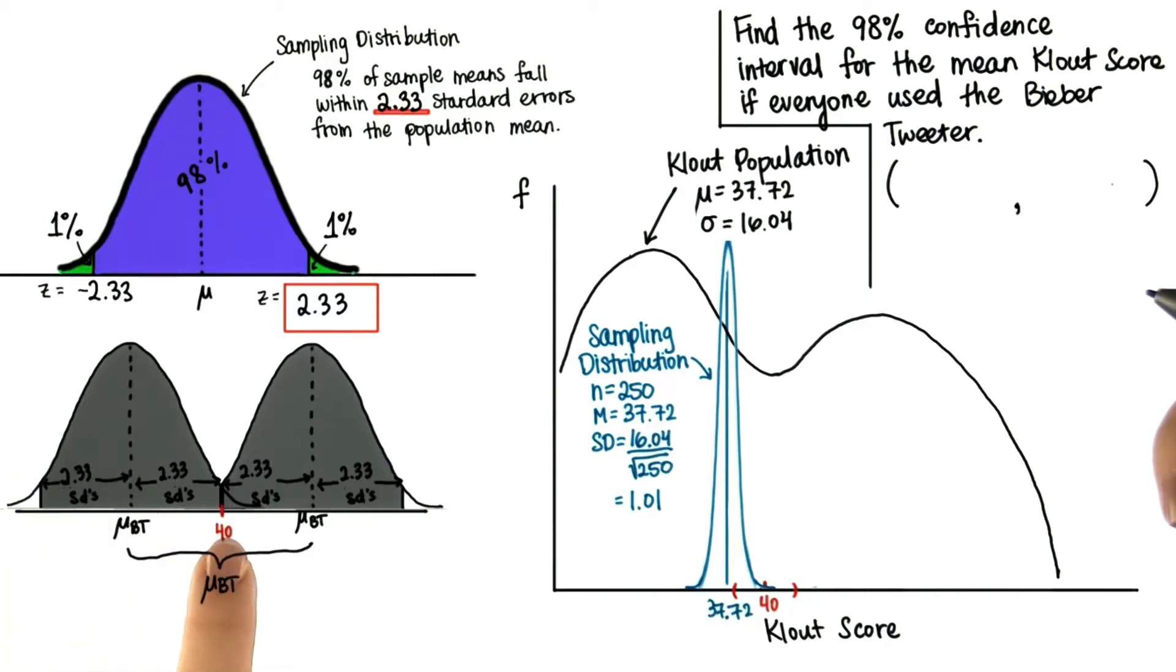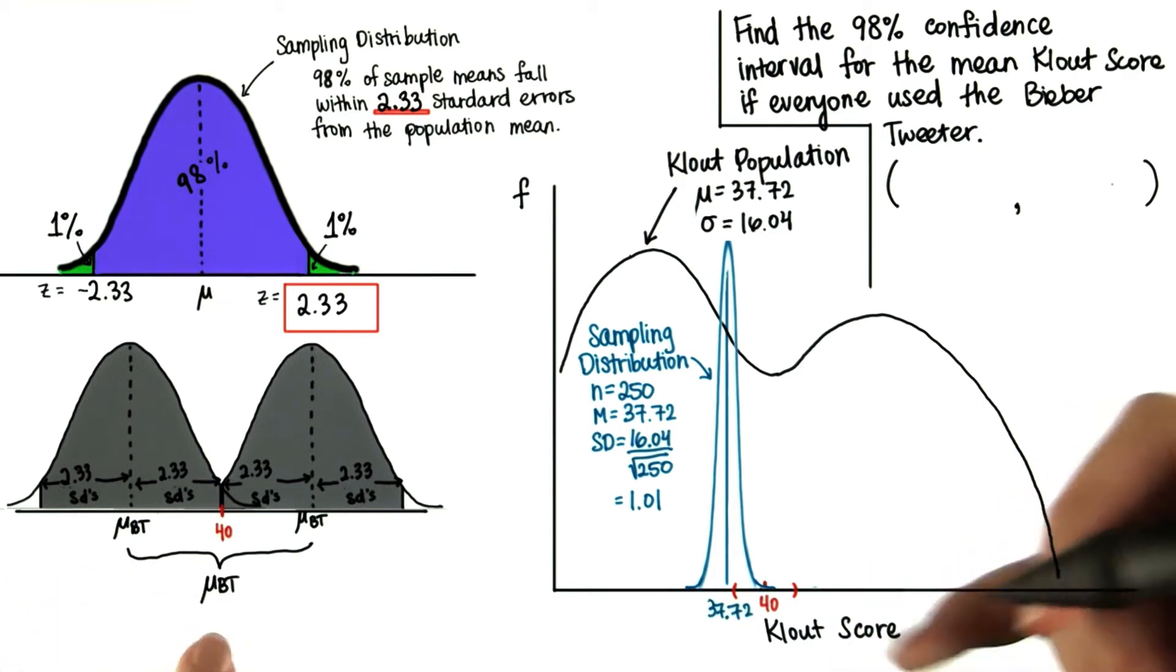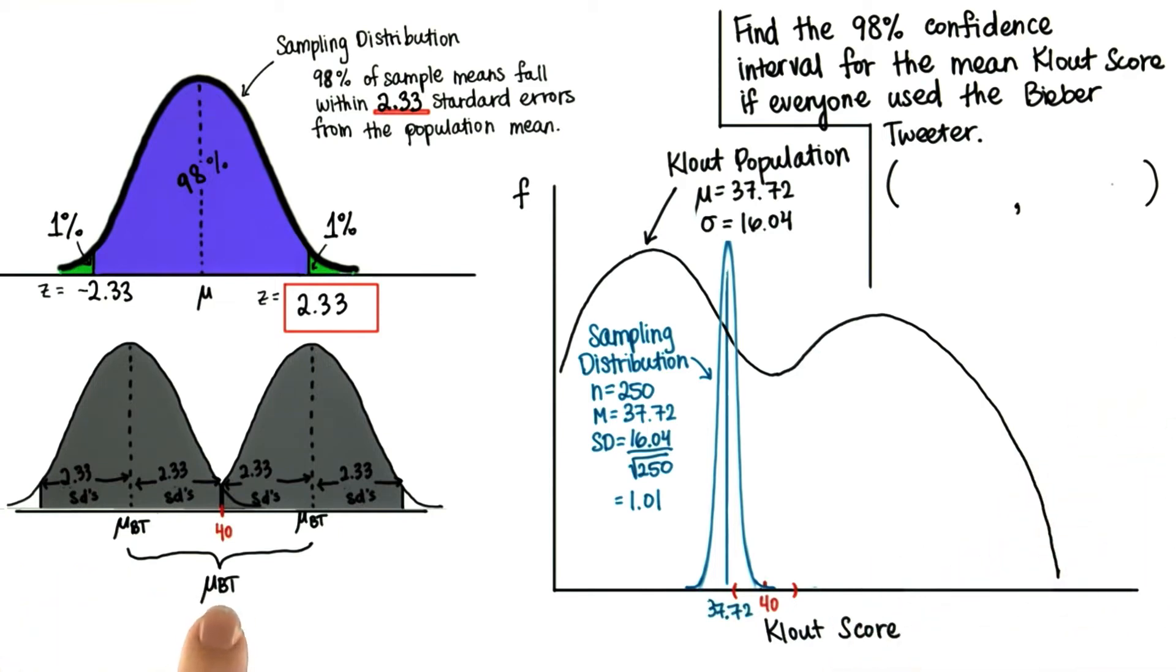So now we're assuming that this sample mean is one of the 98% that falls within 2.33 standard deviations of the population mean. In this case, mu sub bt.